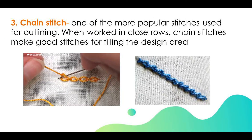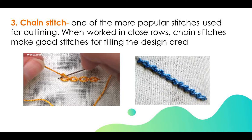Chain stitch is one of the more popular stitches used for outlining. When worked in close rows, chain stitches make good stitches for filling the design area. Cross stitch. Cross stitch is a stitch formed by two crossing arms and may be used for outlining as borders or to fill in an entire area.